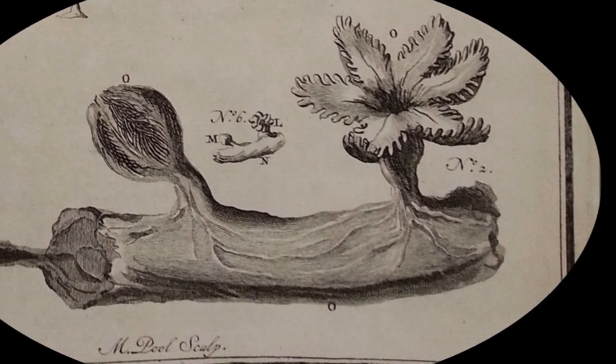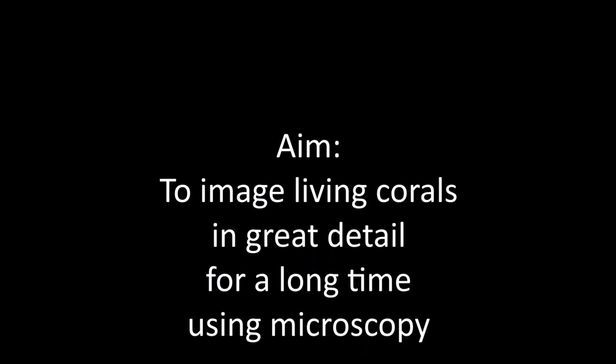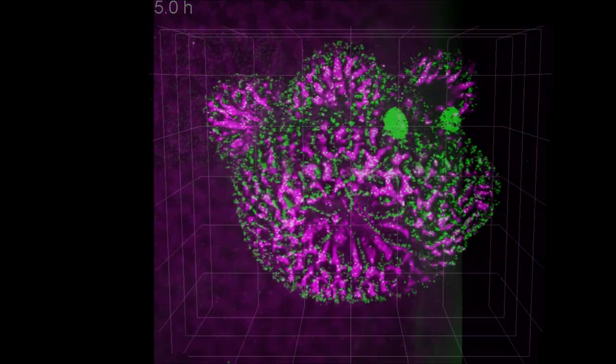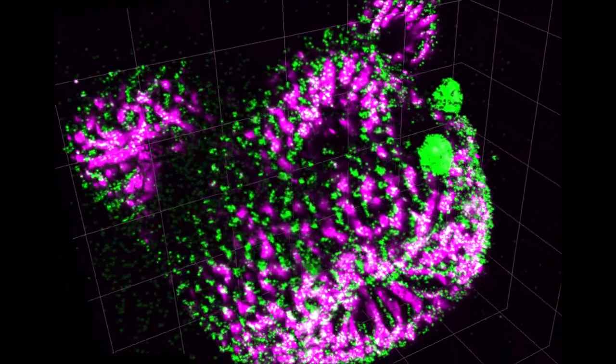So to help us understand them better, our aim was to image living corals in great detail and for a long time using microscopy. But traditional microscopes didn't show enough detail and caused the polyps to pull back into their caves because they didn't like the bright light.